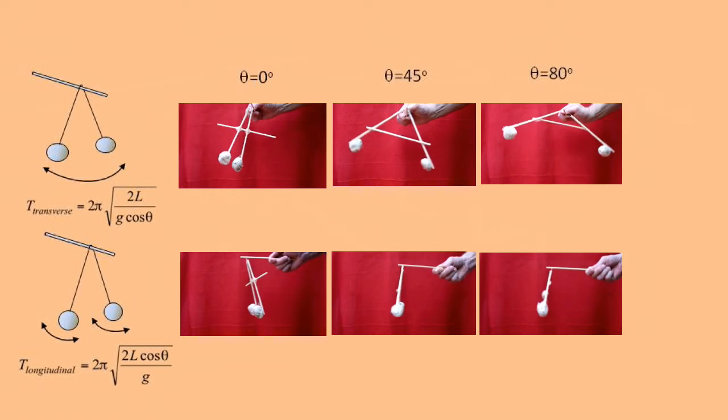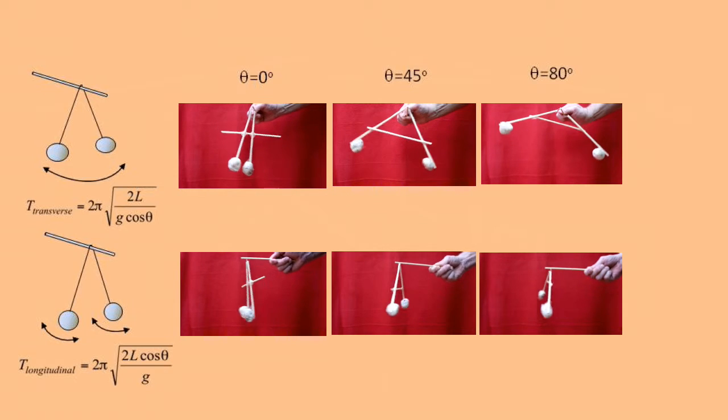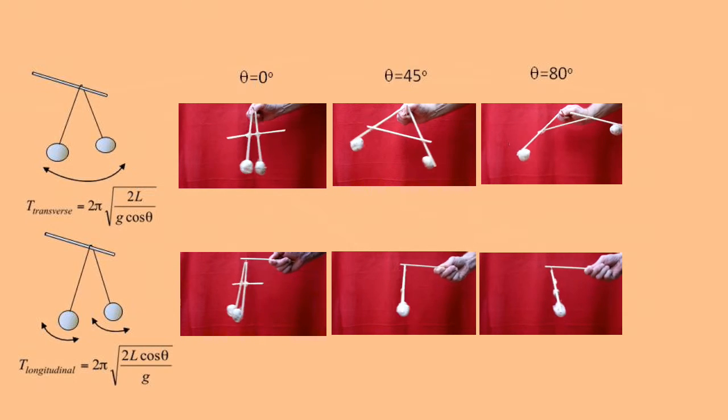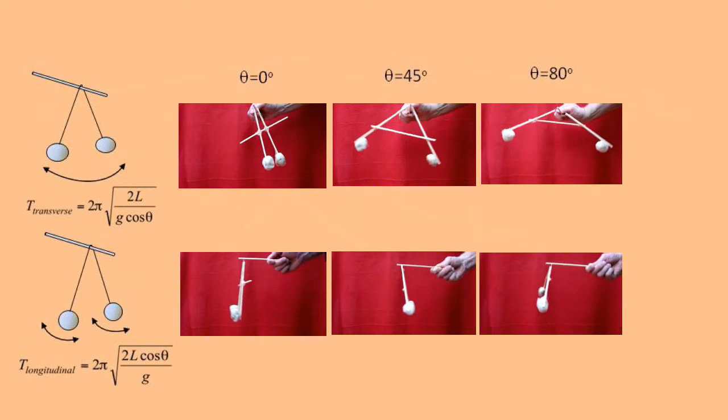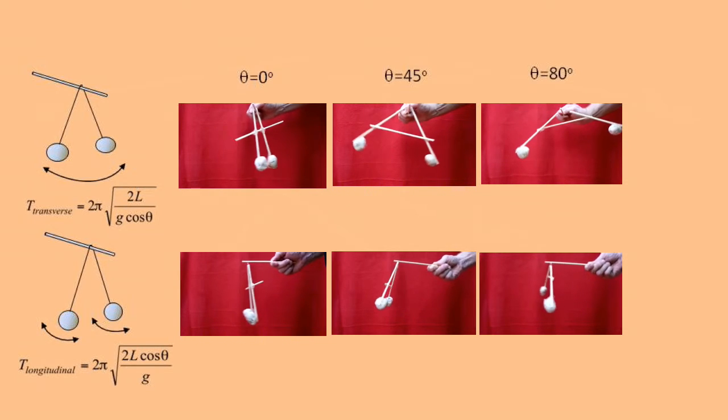The factor is 1/cos θ. So when the angle θ is small, the factor is about 1. So the periods are the same in the two directions.